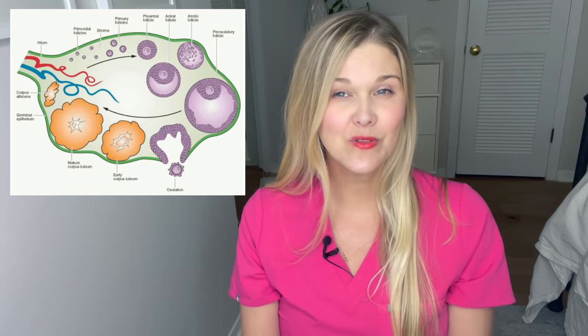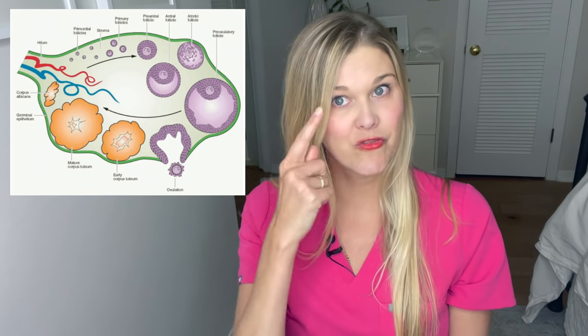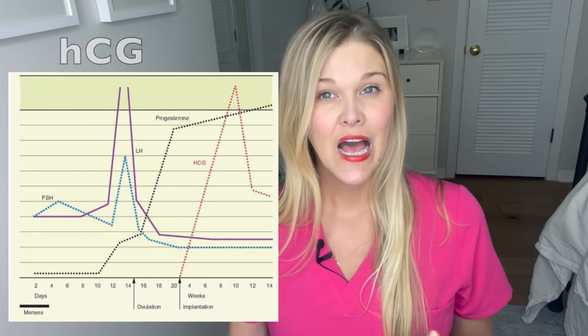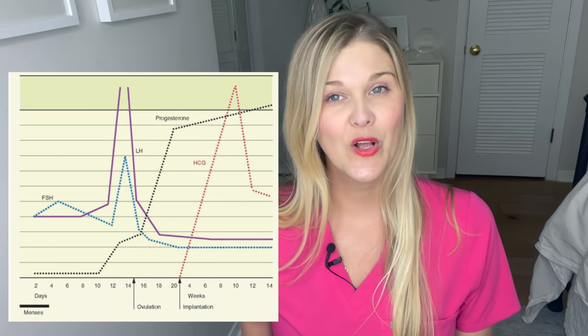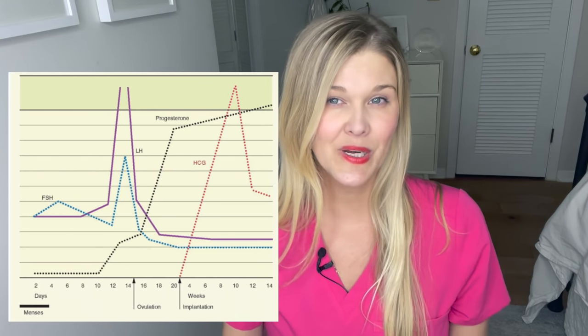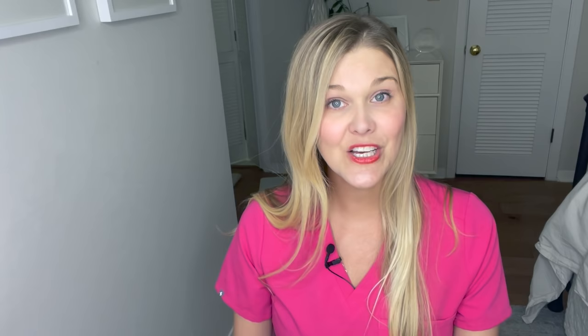After ovulation, the follicle seals back up and relies on pulses of LH from the brain to stimulate pulses of progesterone throughout the entire luteal phase. That corpus luteum has an expiration date of around 14 days. If there's no pregnancy, the corpus luteum dies, progesterone drops, you get a period, and the process starts over. A pregnancy implants and makes HCG — the pregnancy hormone — which is a more constant stimulation of progesterone, causing a constant and steady rise until a plateau.